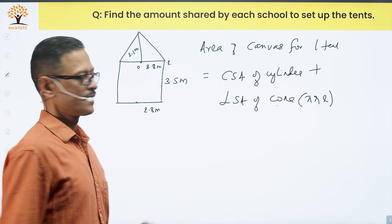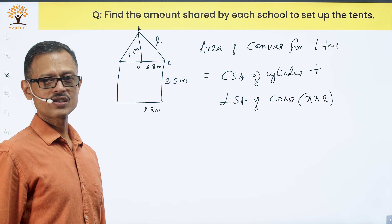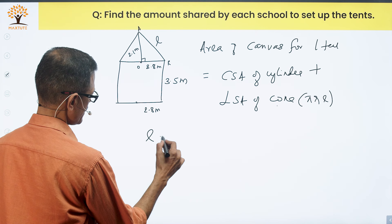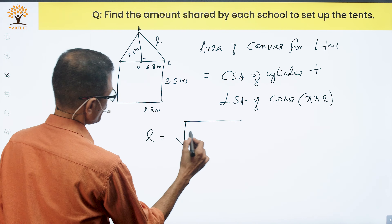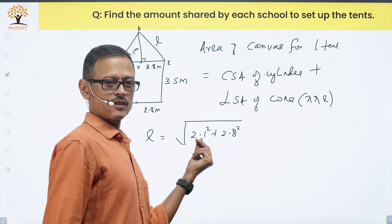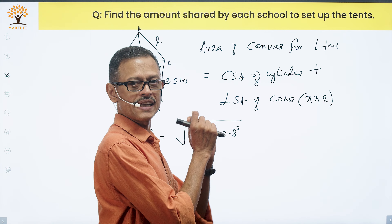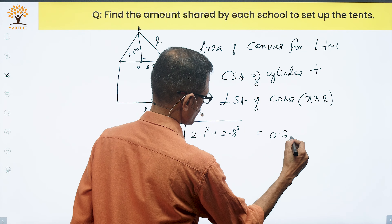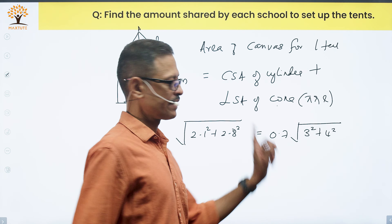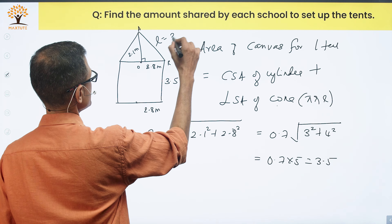We know the radius is 2.8, but we need the slant height l. Using the right triangle: l = √(2.1² + 2.8²). Notice 2.1 = 3 × 0.7 and 2.8 = 4 × 0.7, so this becomes 0.7 × √(3² + 4²) = 0.7 × √25 = 0.7 × 5 = 3.5 meters. So the slant height is 3.5 meters.